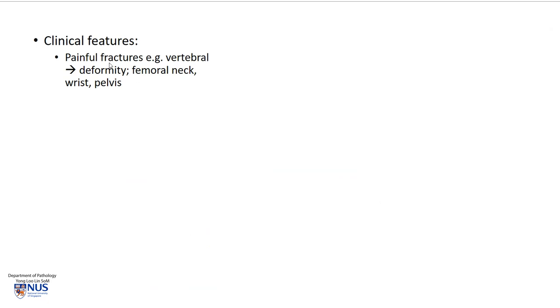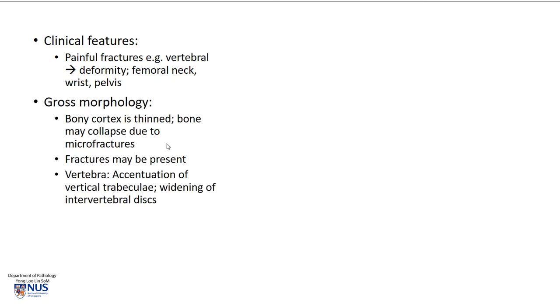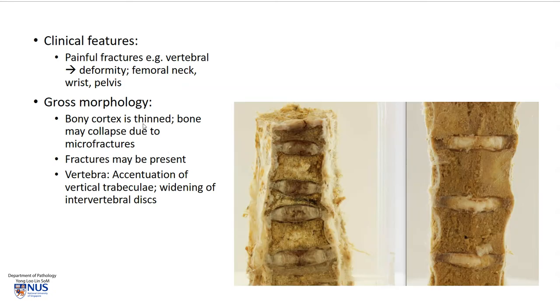Clinically, if there is osteoporosis, this predisposes patients to fractures which can be painful. They can give rise to deformity — for example in the vertebral column — patients can actually be shorter and they can have kyphosis. And of course there can be fractures at other sites from relatively minor trauma. Grossly, the bony cortex appears to be thinned and the bone may collapse due to microfractures, but also more obvious gross fractures may be present, as you can see here.